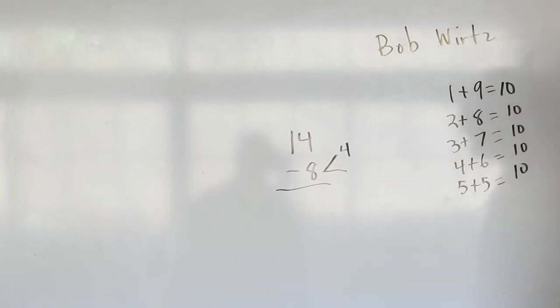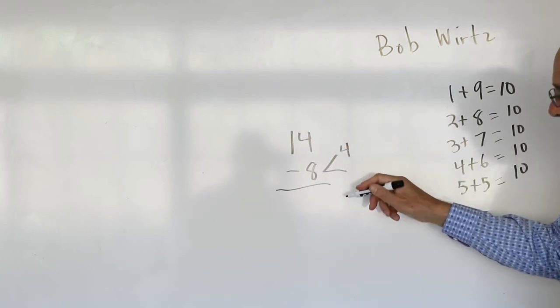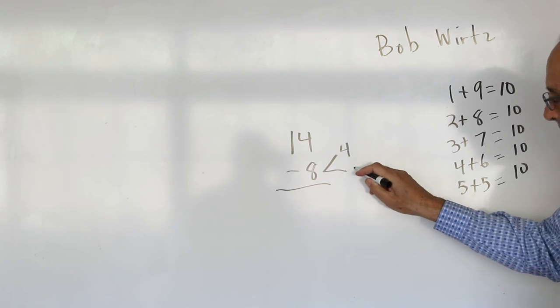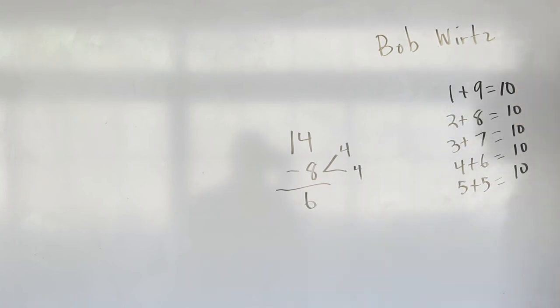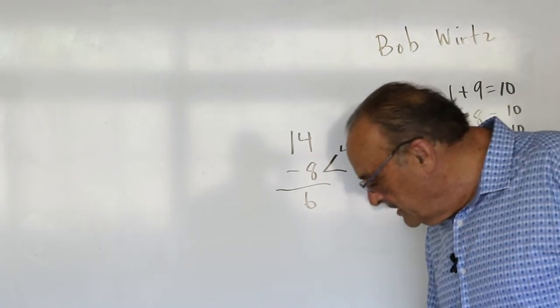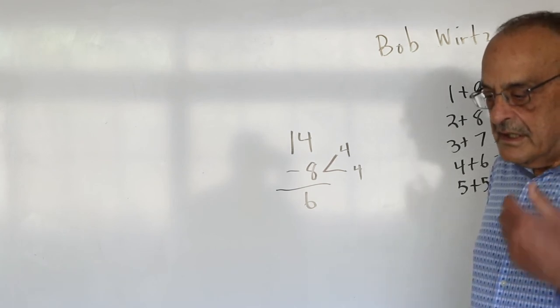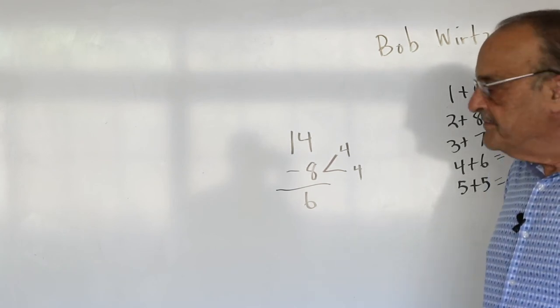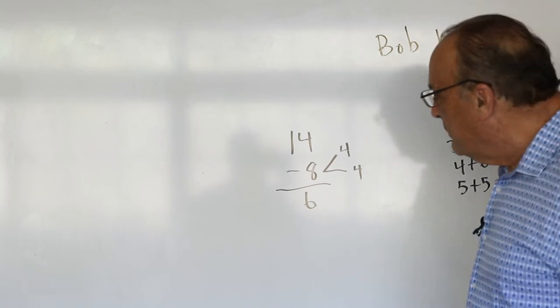So then when they launch into their sentence, they say 14 minus 4 is 10, and 10 minus 4, we don't have to write it even, is 6. They don't even need to write it. You're just working with them, and basically they're just learning to say a sentence. And Bob Wirtz used to say, the sentence represents a thought. So we're looking to see that they're thinking a certain thought that we want them to think.